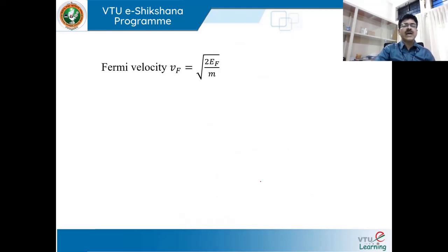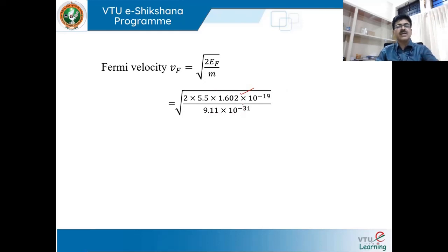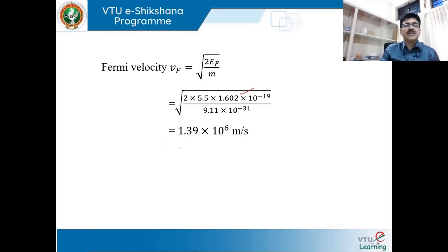To calculate Fermi velocity: Vf = √(2EF/m). The Fermi energy is 5.5 eV, converted to joules by multiplying by 1.602 × 10^-19, divided by the electron mass 9.11 × 10^-31 kg. This gives Vf = 1.39 × 10^6 m/s. This is the velocity of the electrons at the Fermi level.